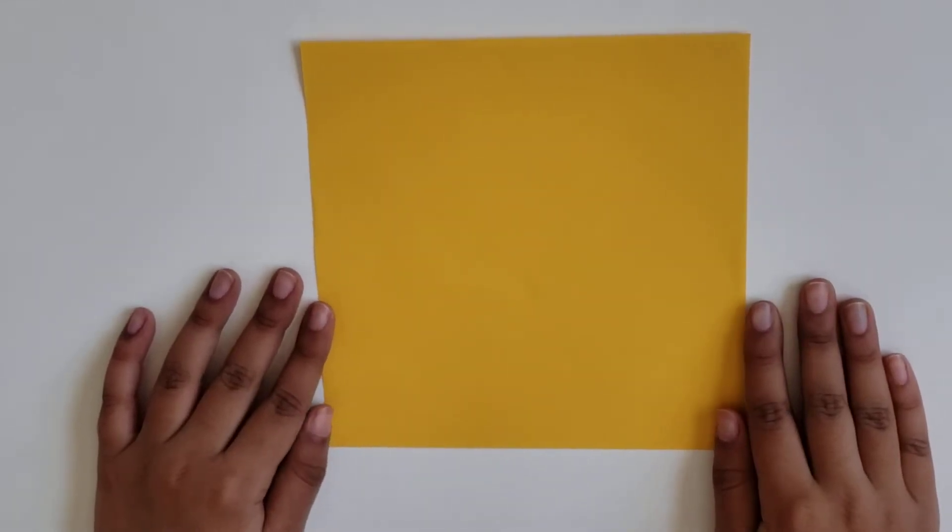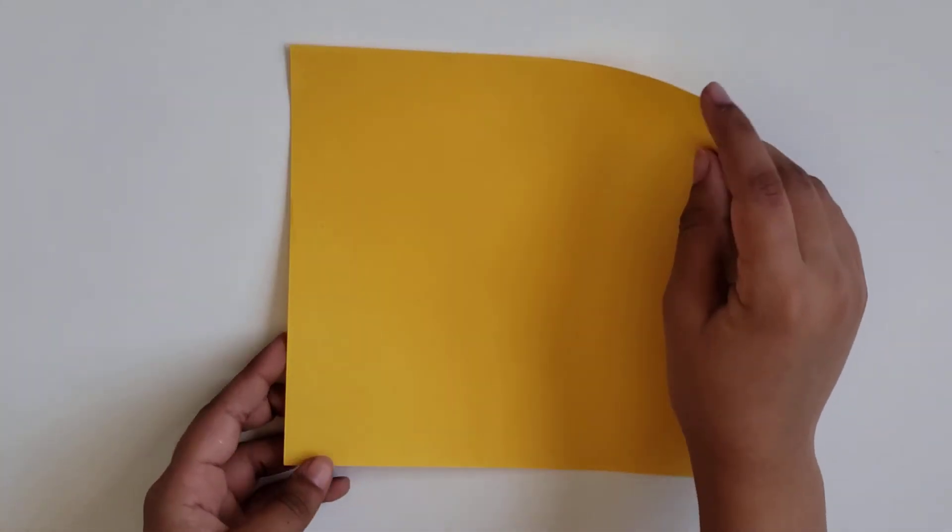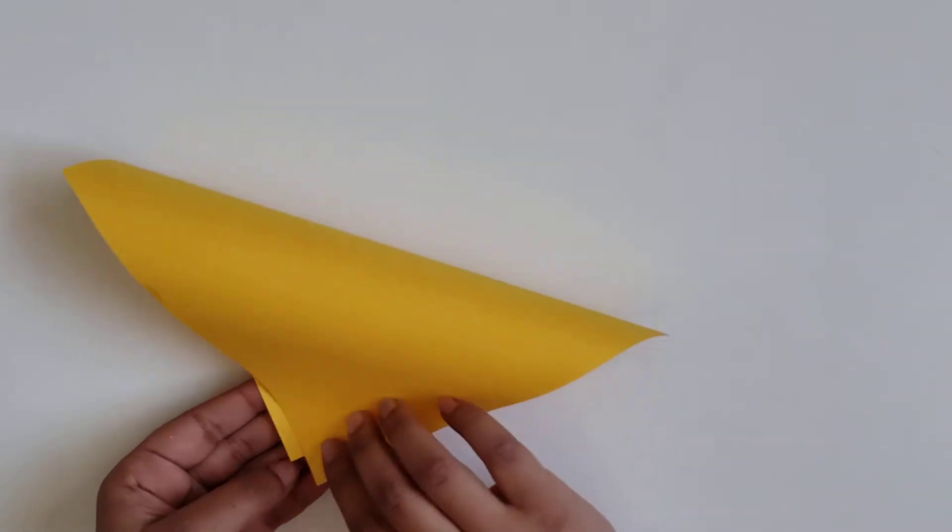Hi guys, today I'm going to teach you how to make a funny fox face. Start off with a square of paper and fold it from this tip to that tip diagonally.